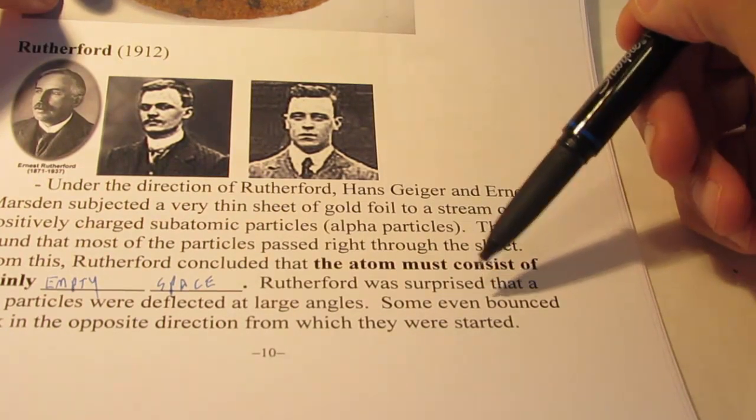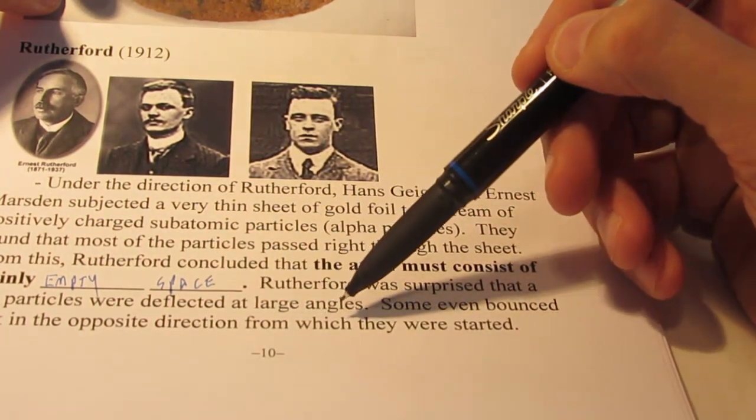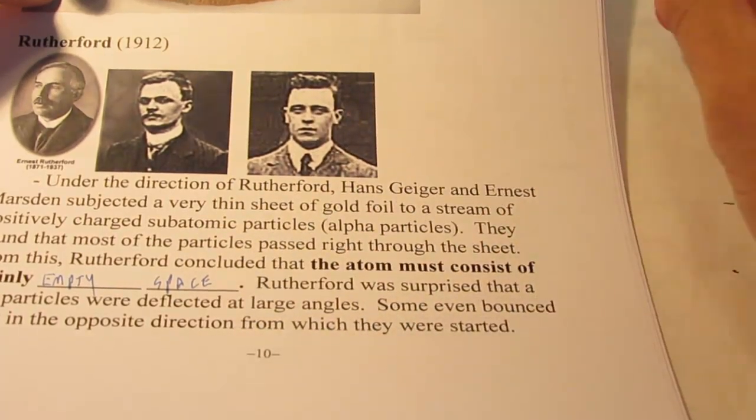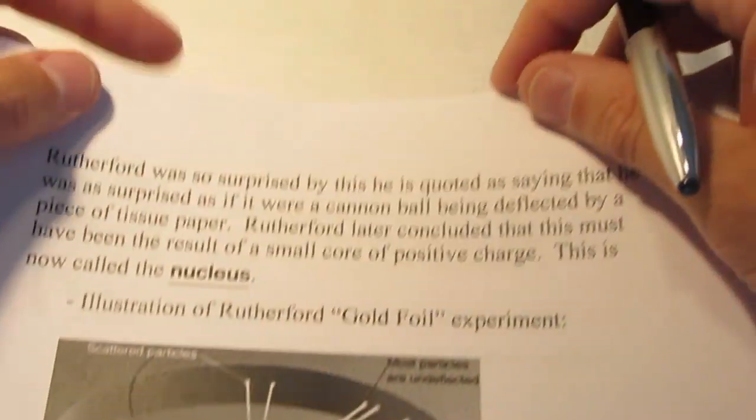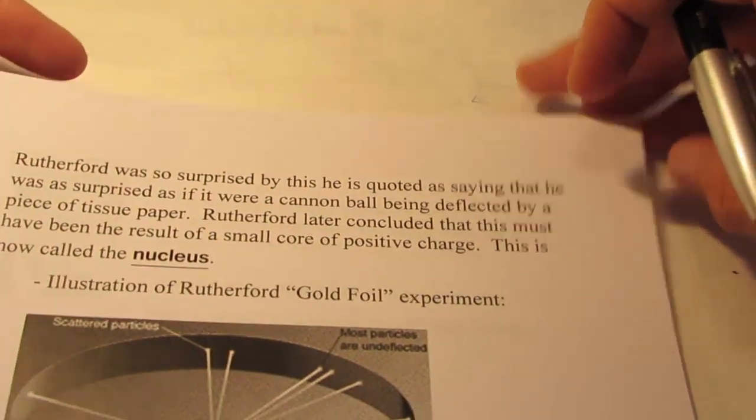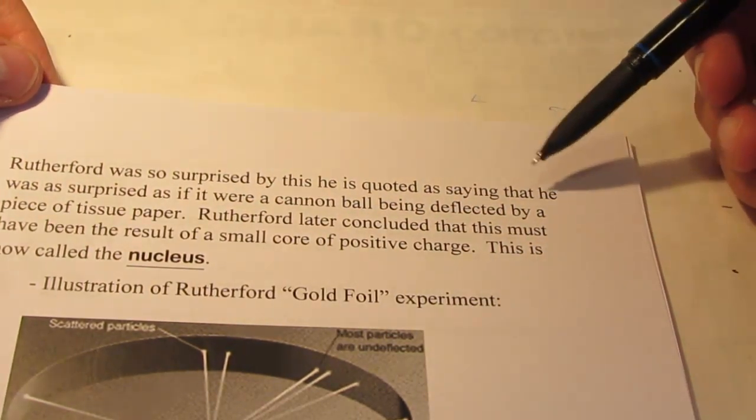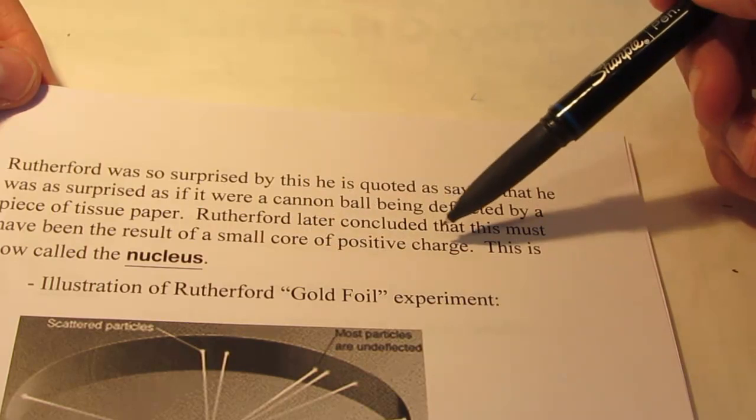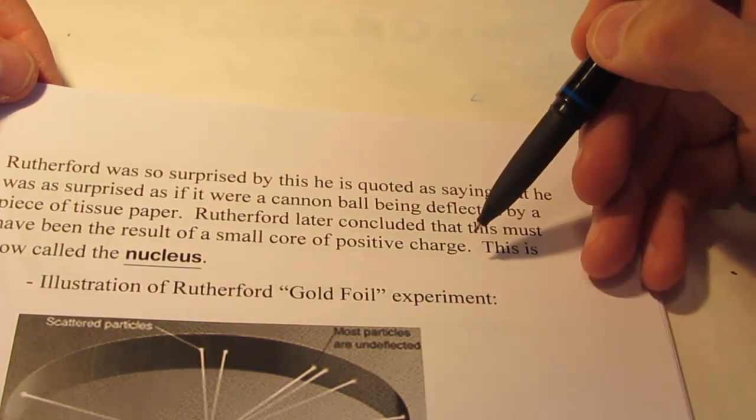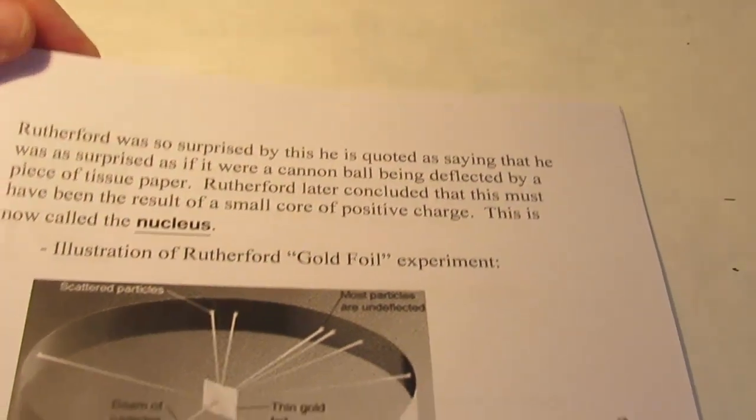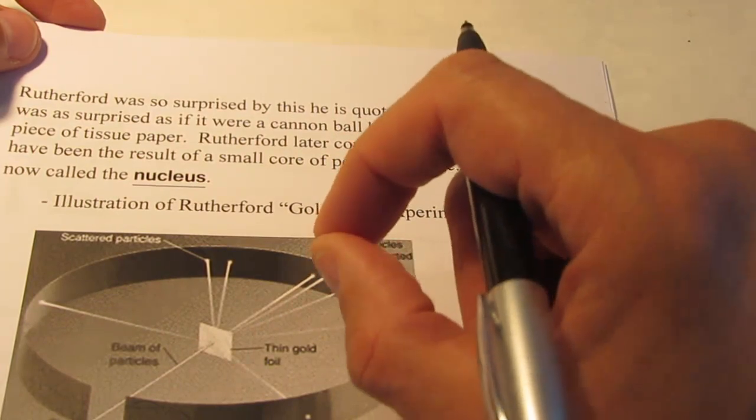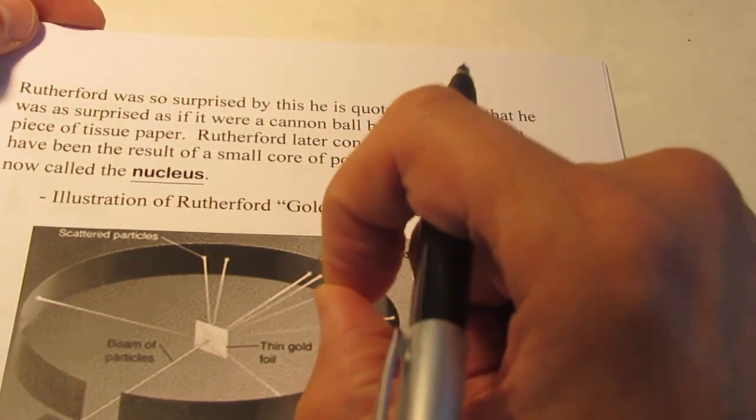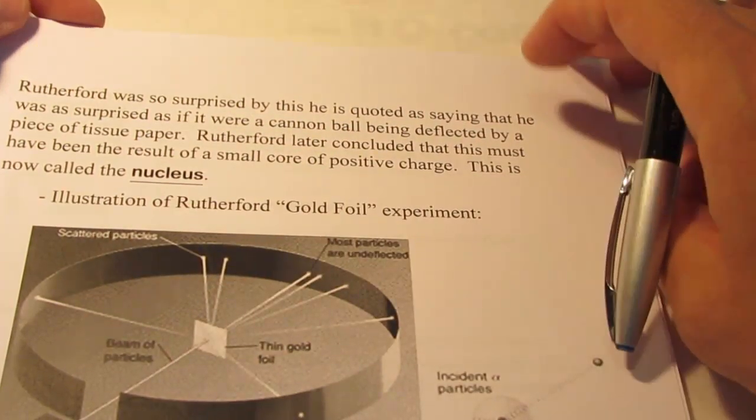Now, we're going to have a little discussion about this experiment because it deserves it. It's fairly important as far as the atomic theory is concerned. Rutherford proposed that an atom consists primarily of nothing, of empty space. Rutherford was surprised that a few of the alpha particles were deflected at such large angles when they hit the gold foil. He expected them all to go straight through. Some even bounced back in the opposite direction from which they started. Rutherford was so surprised by this that he is quoted as saying that he was as surprised as if it were a cannonball being deflected by a piece of tissue paper. Rutherford later concluded that this must have been the result of a small core of positive charge, a very dense, tiny core of positive charge. This is now called the nucleus.